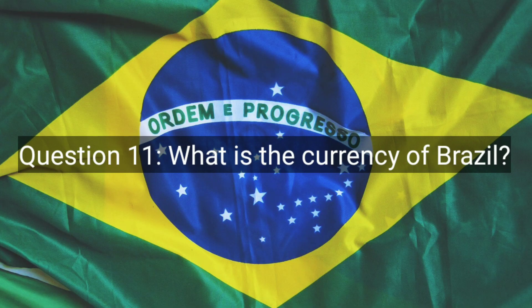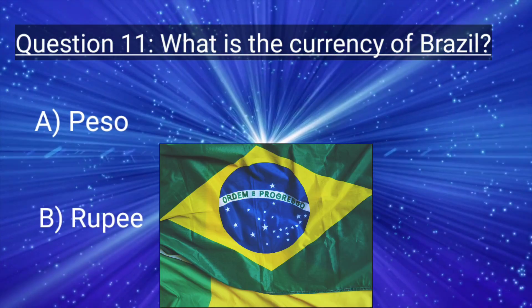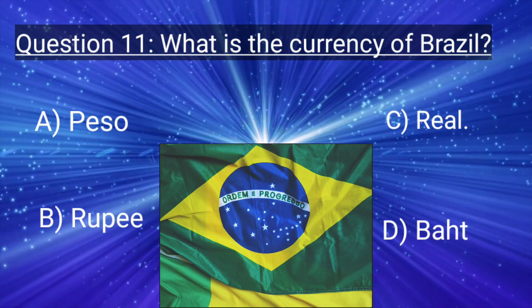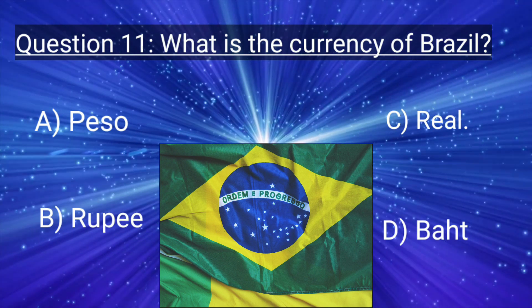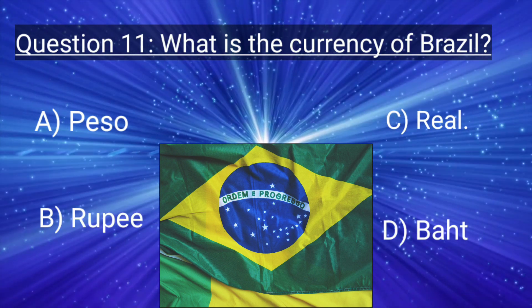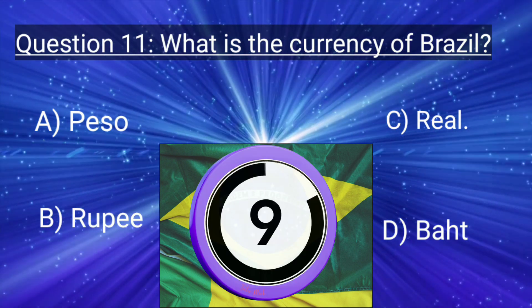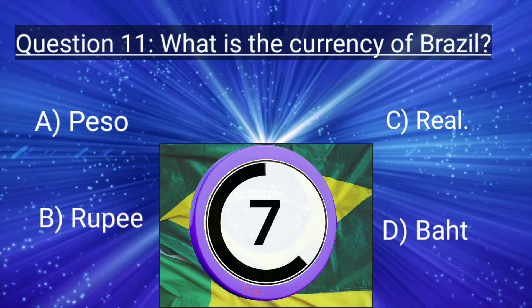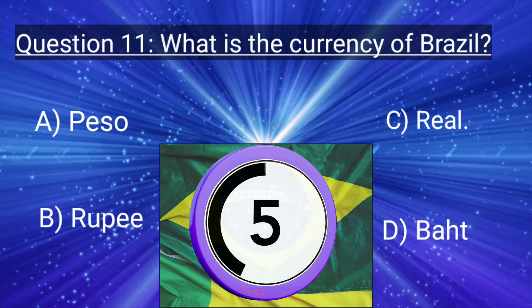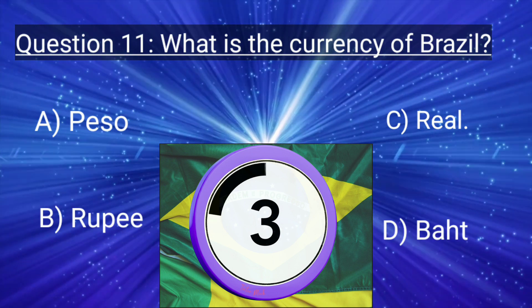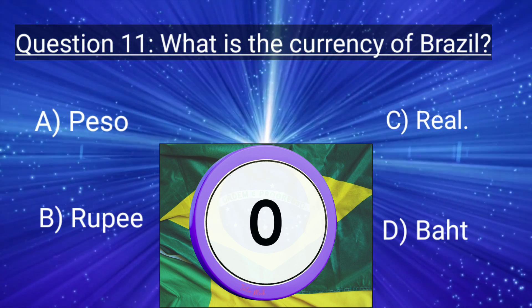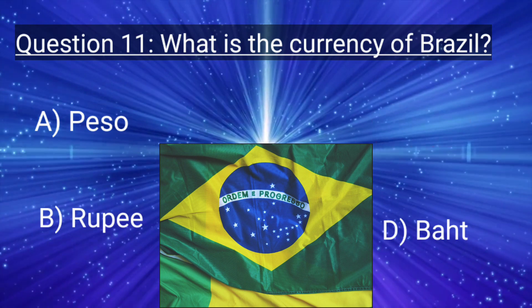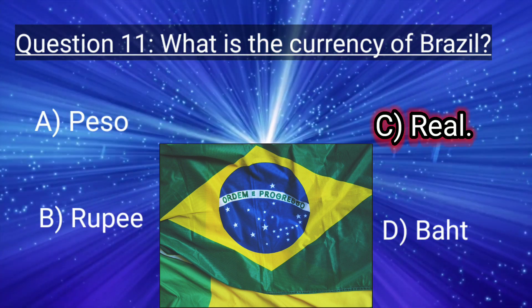Question 11. What is the currency of Brazil? A. Peso, B. Rupees, C. Real, D. Baht. You have only 10 seconds to think. Your time is starting now. Okay, friends, your time is up. The right answer is C. Real.